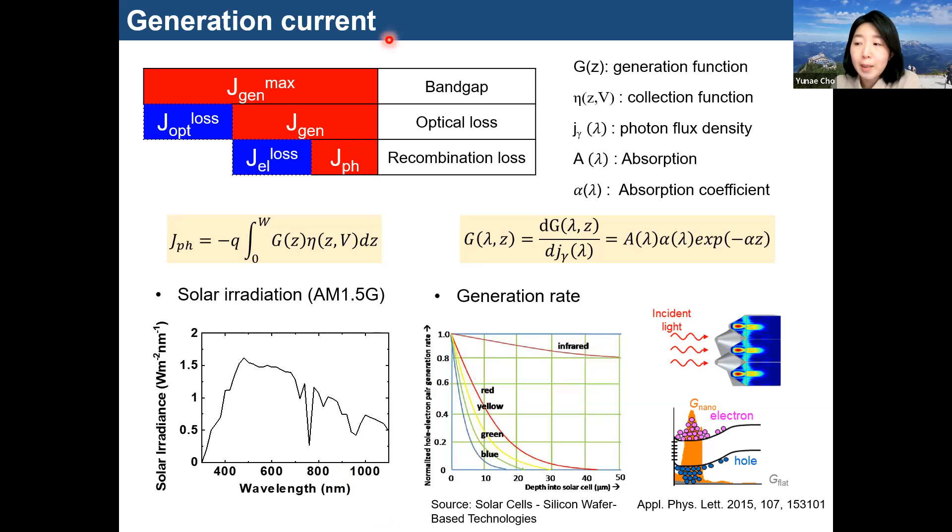Since the generated electrons can be known from the generated current, let's take a look at the generation current. First of all, when light of energy greater than the bandgap energy of the absorber layer is radiated, there is the maximum current density. However, photocurrent is reduced by optical loss and electrical loss.